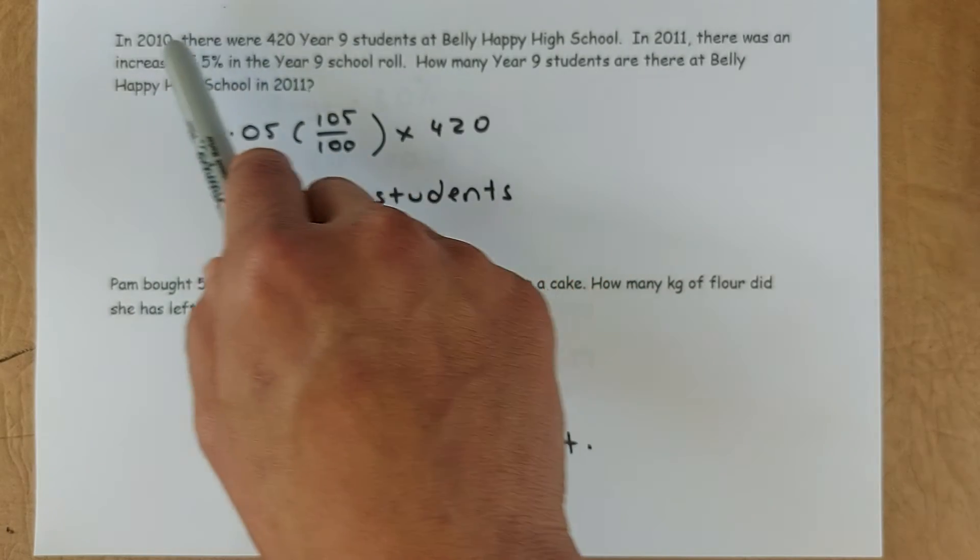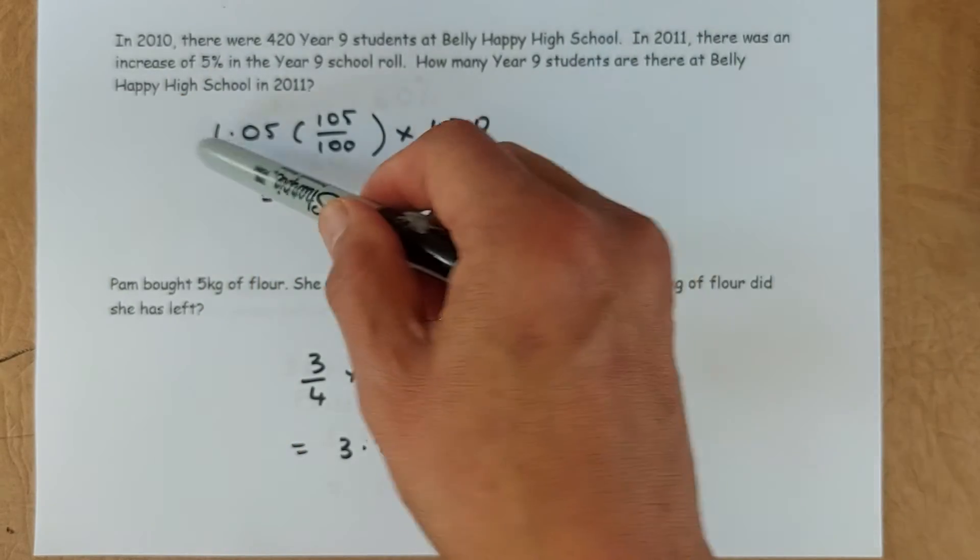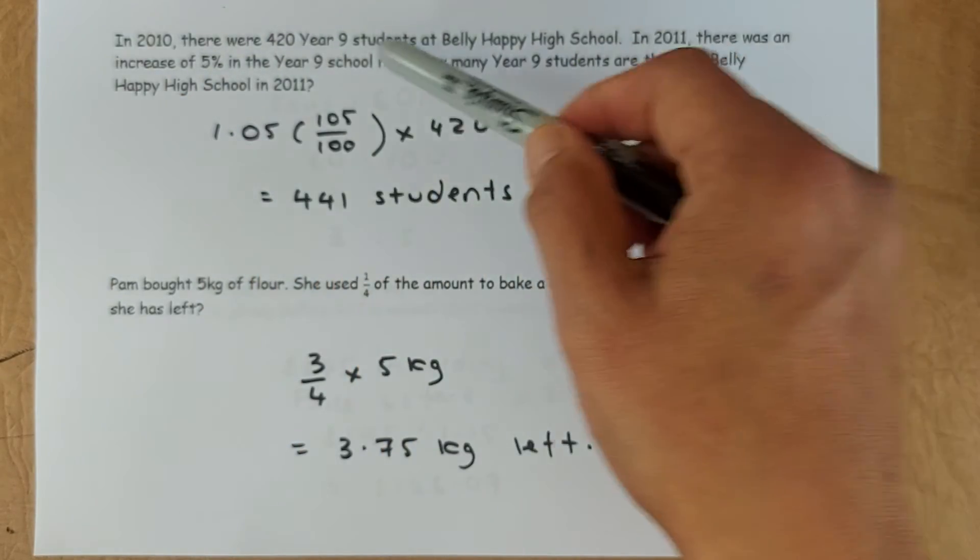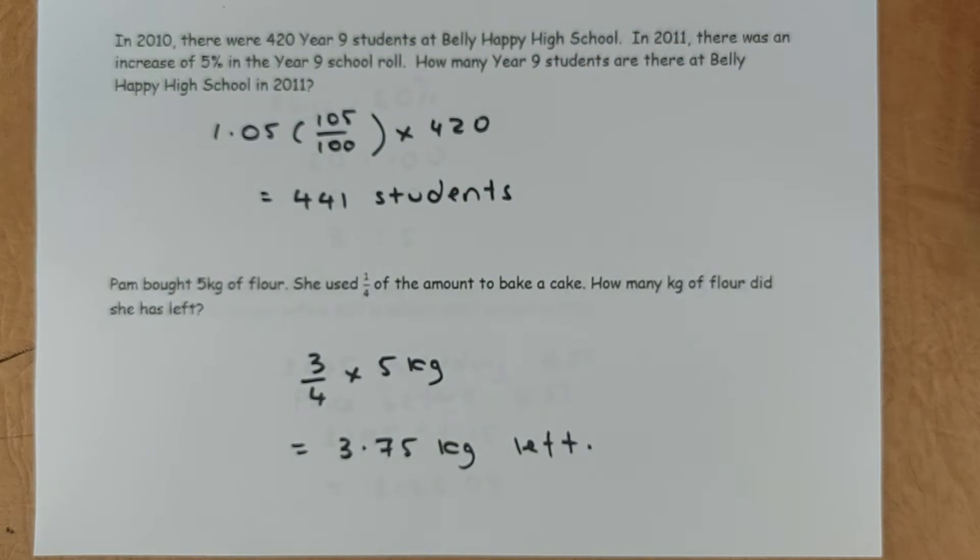So originally it was 100%, increase of 5%, it becomes 105. So to calculate 105 over 100 is 1.05 times the original amount, 420. Put in your calculator. There are now 441 students.